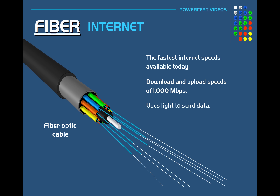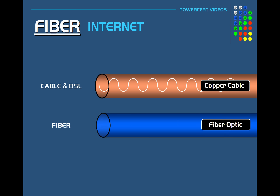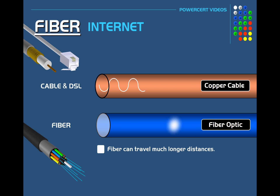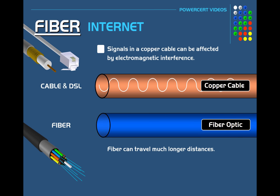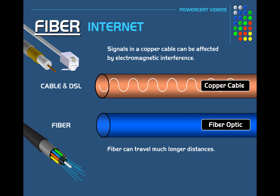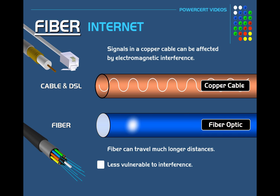In addition to faster speed, fiber can also travel much longer distances than DSL or cable. DSL and cable transmit data using electricity over copper cable, and signals in copper cable can be affected by electromagnetic interference as they travel, which can weaken the signal — especially over long distances. But fiber uses light to transmit its data over a thin glass cable, which makes it less vulnerable to interference.